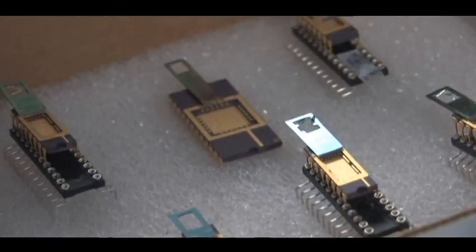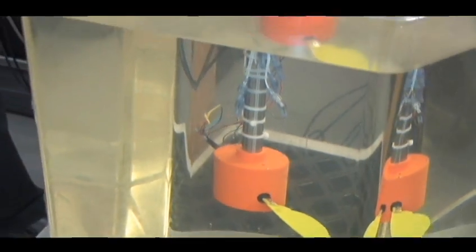Usually, like a wind tunnel, you take something really big, like an airplane, then you shrink it down, make it smaller, and use that to run tests. We're doing the reverse, where we take something really small, make it bigger, and run tests on it.